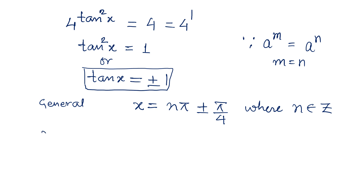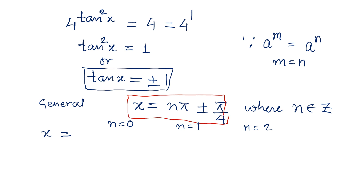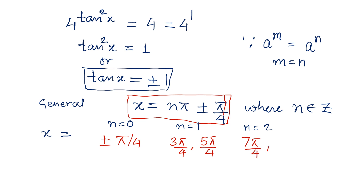We can see a few values by putting n = 0, 1, 2, and so on. For n = 0: x = ±π/4. For n = 1: x = π − π/4 = 3π/4, or x = π + π/4 = 5π/4. For n = 2: x = 2π − π/4 = 7π/4, or x = 2π + π/4 = 9π/4.